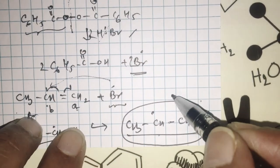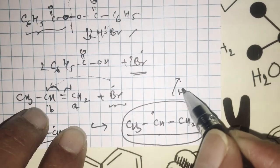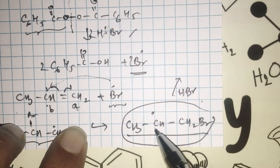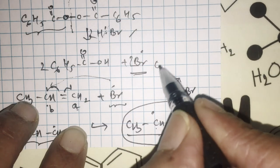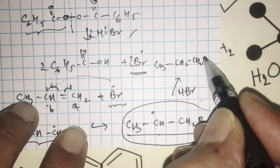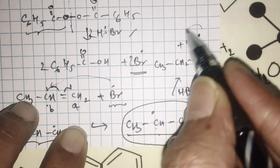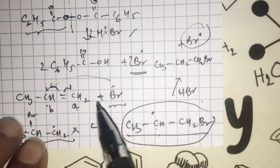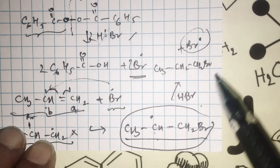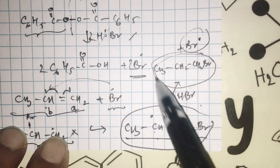Once this forms, it readily reacts with another mole of HBr. That HBr now gives hydrogen, generating a fresh Br free radical. This fresh Br radical is ready to attack again another alkene molecule. Therefore, the product is 1-bromopropane.